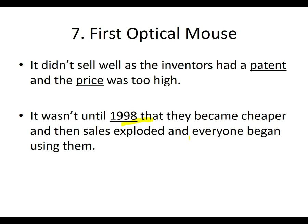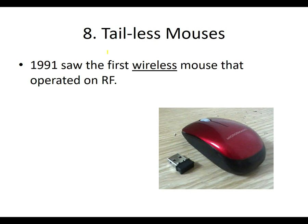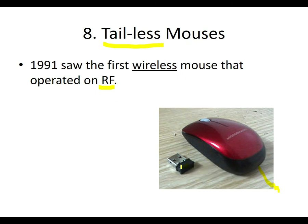Next, the mouse lost its tail. In 1991 the first wireless mouse appeared, operating on radio frequency. It uses a small USB receiver plugged into the computer — the receiver is not a transmitter; the transmitter is in the mouse itself, because the mouse is an input device that only sends information to the computer.